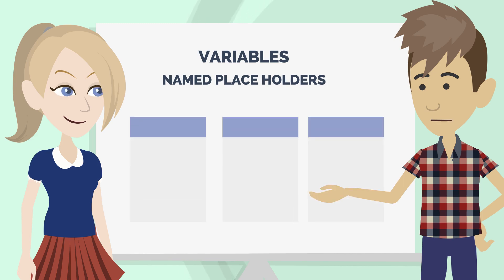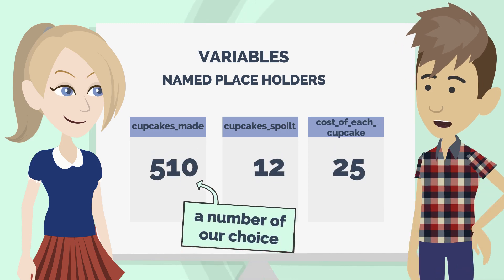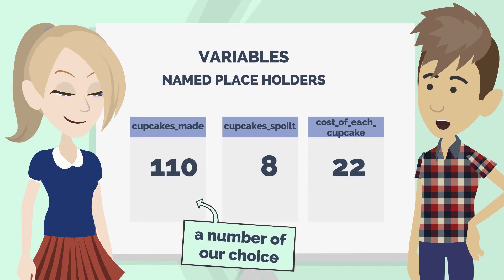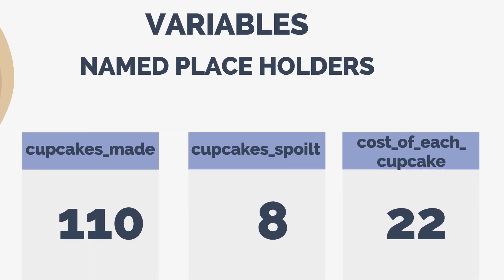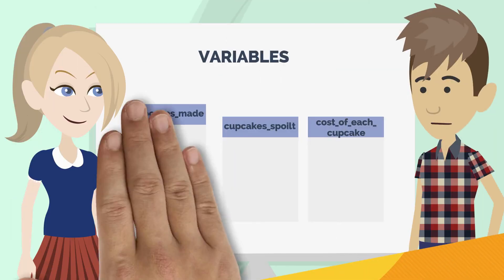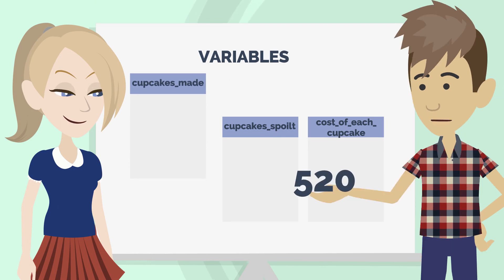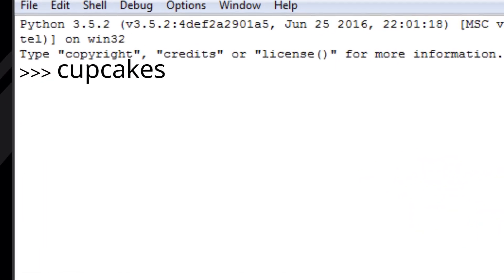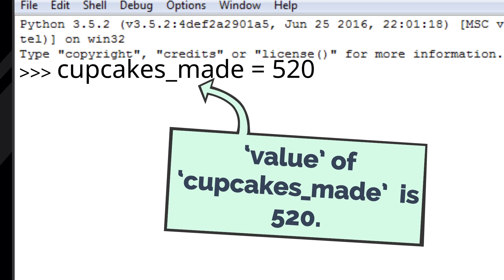You can think of variables as some sort of named placeholders. Imagine having three containers, each with a different name — cupcakes_made, cupcakes_spoiled, and cost_of_each_cupcake. In each container we can store a number of our choice, and whenever we want, we can remove the number and put some other number in. In Python, we place numbers into variables using the equals sign. So if we want to tell Python to store the number 520 in the cupcakes_made variable, we type: cupcakes_made equals 520.